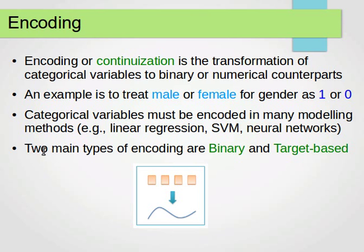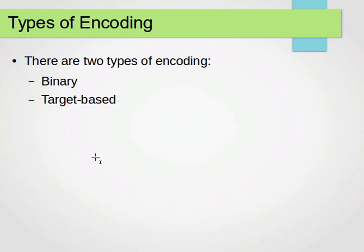We have two types of encoding: binary encoding and target-based encoding. From encoding, we have categorical variables, and we convert them into continuous or numerical variables.